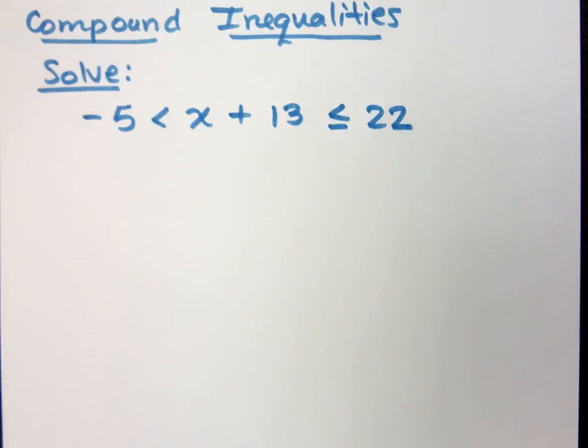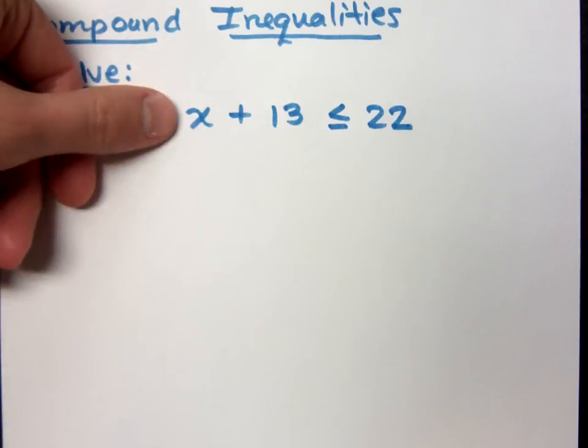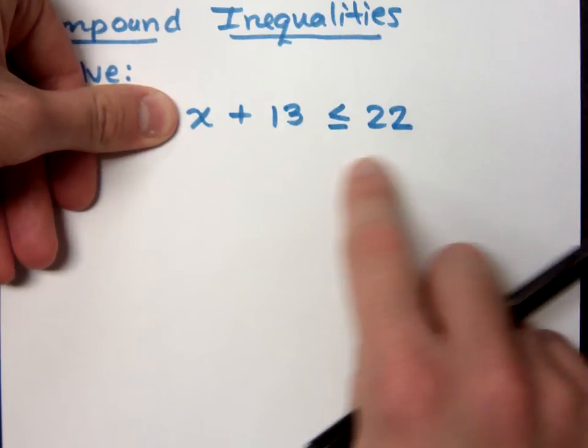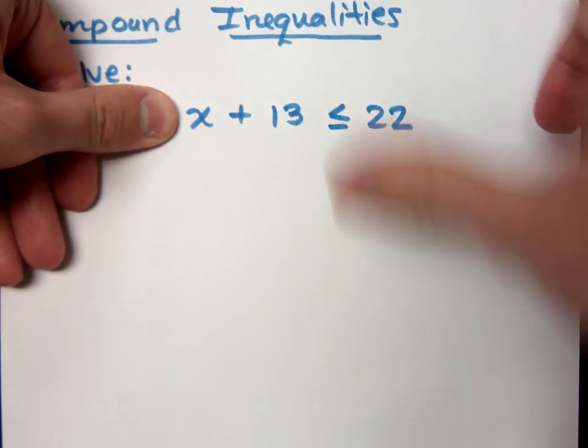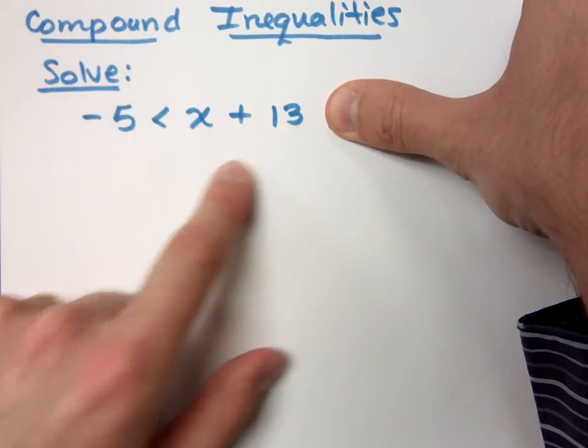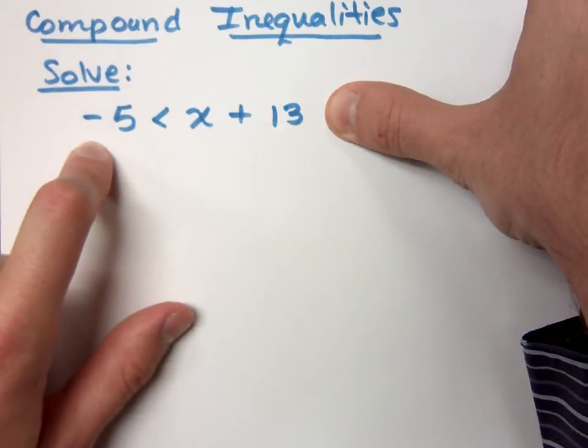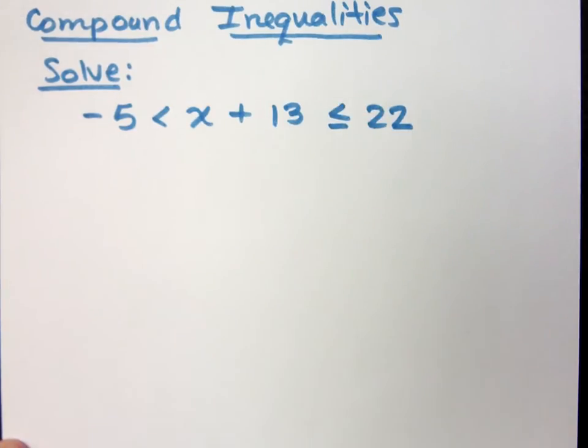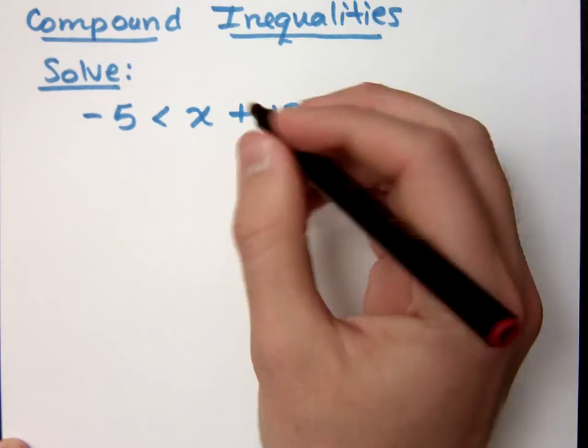What we need to make sure we do is get x by itself. Now if I did this, it would be pretty easy to see that you just have to move the 13 over to isolate the x. If I have this, you would still have to subtract the 13 to move it over to get x by itself. With these compound inequalities, what we call a three-part inequality like this, you must get x by itself and the x has to be in the middle.